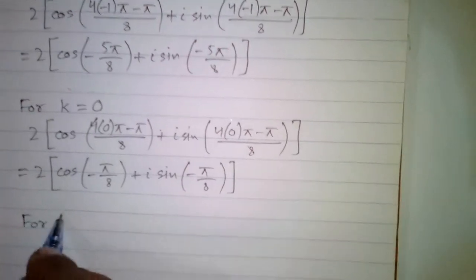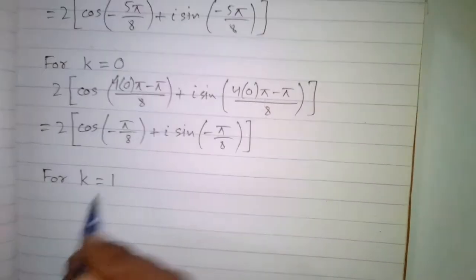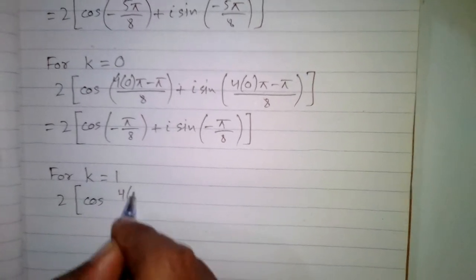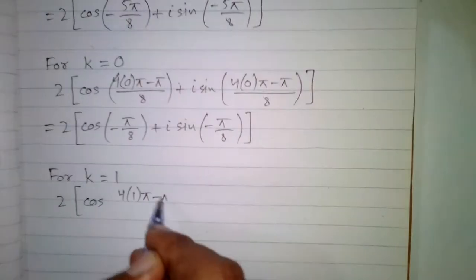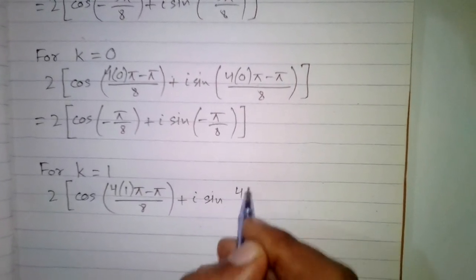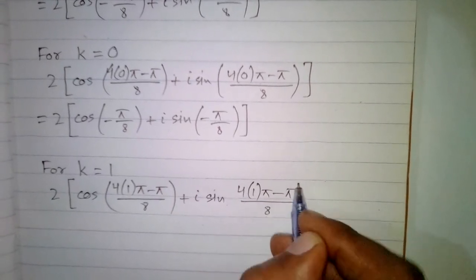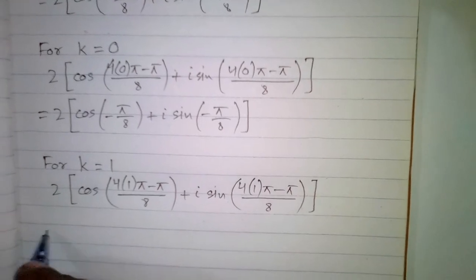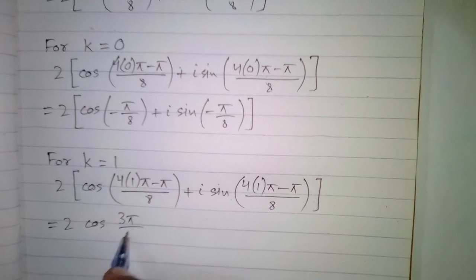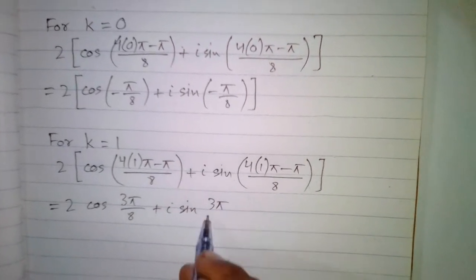The third root is obtained by putting k equal to 1: 2·(cos(4·1·π − π/8) + i·sin(4·1·π − π/8)), which simplifies to 2·(cos(3π/8) + i·sin(3π/8)).